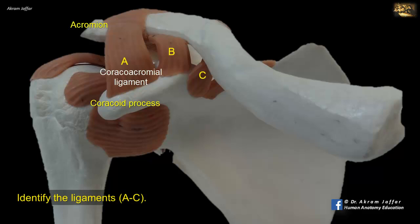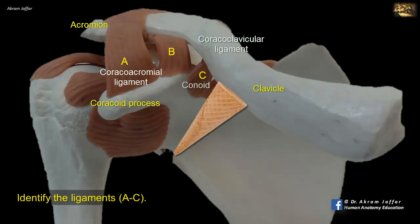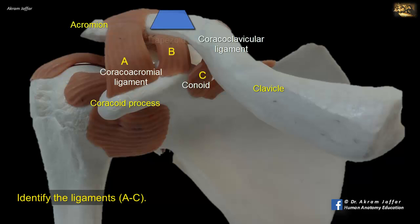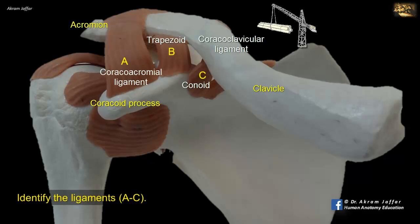B and C together constitute the coraco-clavicular ligament, which is a very strong ligament that unites the coracoid process to the undersurface of the clavicle. It consists of two ligaments, the conoid and trapezoid ligament. The conoid ligament, C, is an inverted cone whose base is attached to the conoid tubercle on the inferior surface of the clavicle, and its apex is attached to the base of the coracoid process of the scapula. The trapezoid ligament, B, is attached to the trapezoid line on the clavicle and on the superior surface of the coracoid process, thus it lies almost horizontal. The coraco-clavicular ligament is largely responsible for suspending the scapula and upper limb from the clavicle.